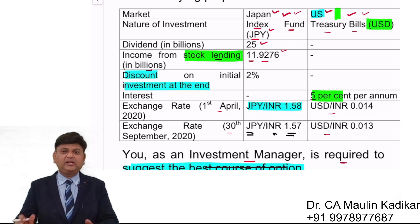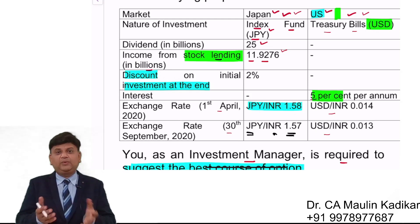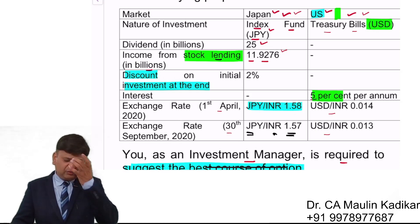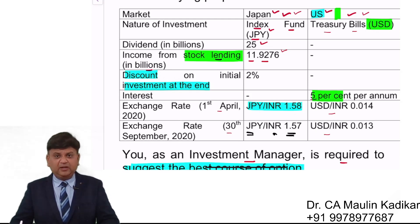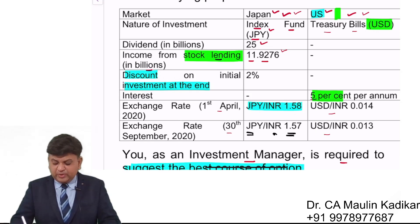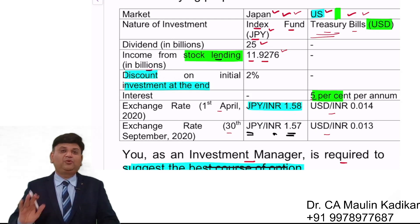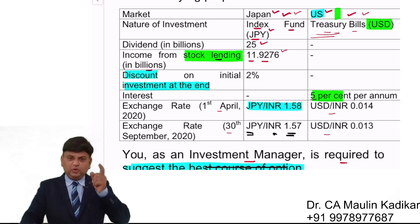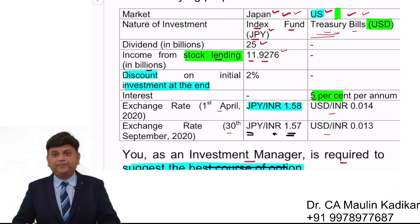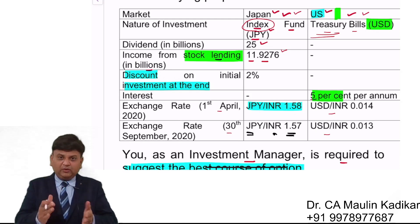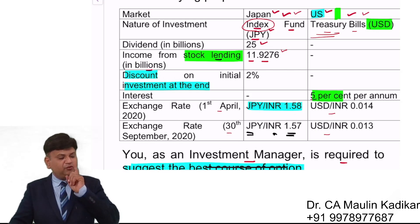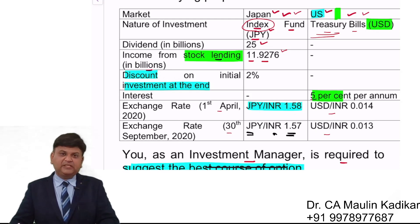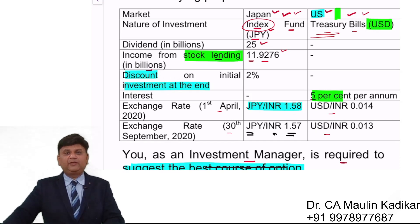Both options give coincidentally the same amount of gain. However, the US treasury bill has zero risk, whereas the index investment in Japan carries market risk. Since the financial gain is the same, the option with lower risk — the US investment — is definitely preferable over the Japanese investment.